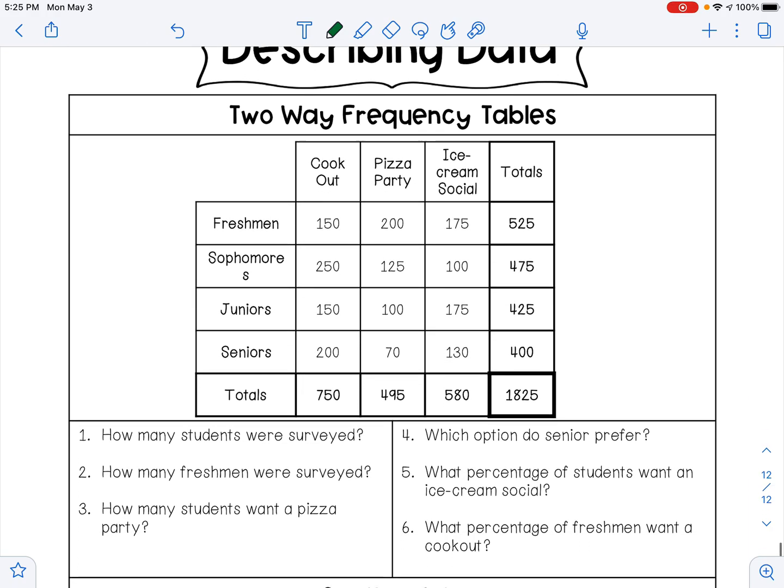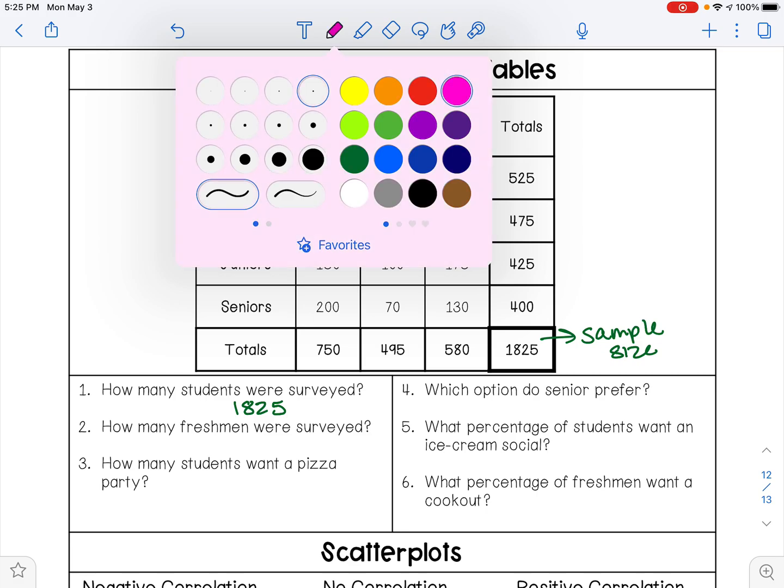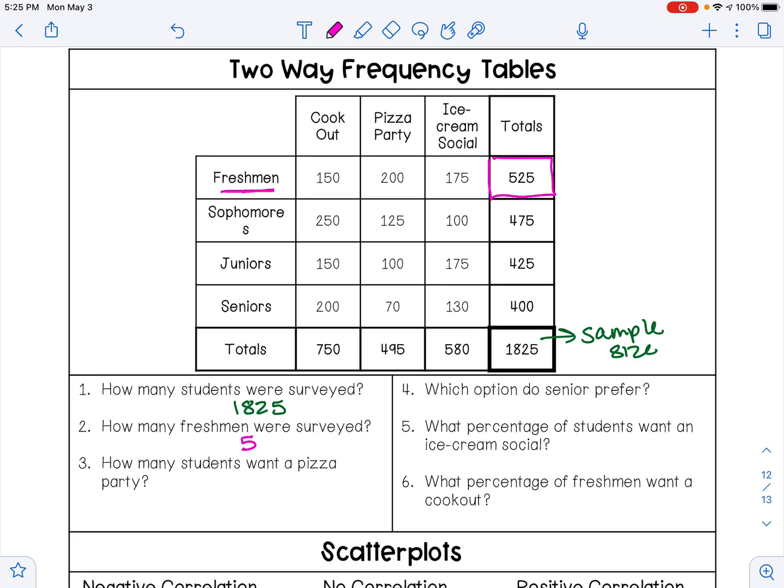Then we learned about two-way frequency tables. And so when I look at this two-way frequency table, we want to know how many students were surveyed. That's always going to be your sample size. Here our sample size is 1,825 students. We want to know how many students were freshmen, so we're going to go to freshmen and we're going to go to their total, and that total is 525.